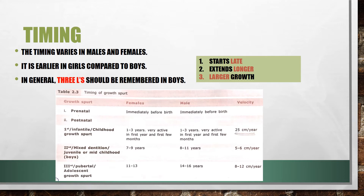The timing of growth spurts is divided into prenatal and postnatal. Prenatally, in both males and females it occurs immediately before birth. Postnatally there are three phases. The first is the infantile or childhood growth spurt: in both females and males it occurs at 1 to 3 years, very active in the first year and first few months. The velocity at this stage is 25 centimeters per year.